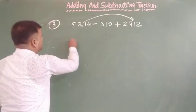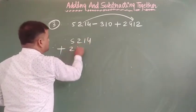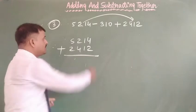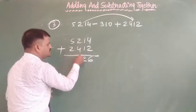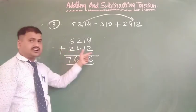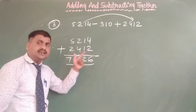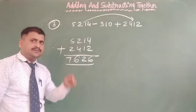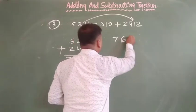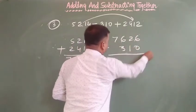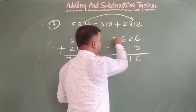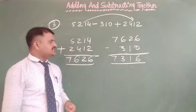5,214 and plus 2,412. 4 plus 2 is 6, 1 plus 1 is 2, 2 plus 4 is 6, and 5 plus 2 is 7. 5,214 plus 2,412 gives us 7,626. And dear students, this time we have to subtract 7,626 minus 310. Now 7,626 minus 310: 6 minus 0 is 6, 2 minus 1 is 1, 6 minus 3 is 3, and 7 bring down. Your answer is 7,316. I hope that is clear to everyone.